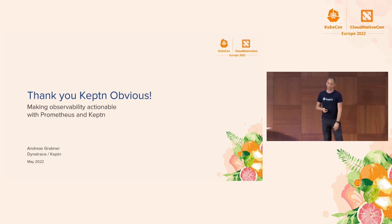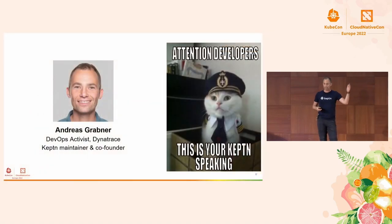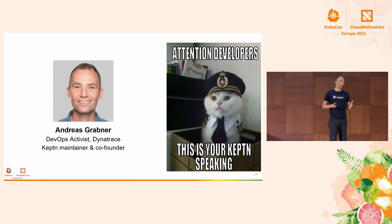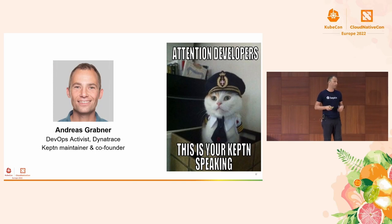The talk today is about making observability actionable with Prometheus and Keptn. My name is Andy Grabner. I work for Dynatrace during the day but I'm also a Keptn maintainer and contributor. If you think Keptn is yet another CI/CD tool or an 'if this then do this' tool, hopefully I can prove you wrong because I want to give you a different perspective on Keptn.